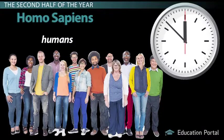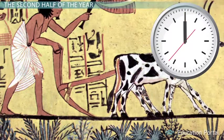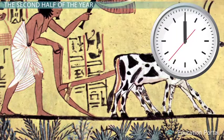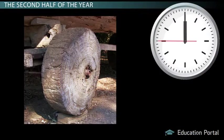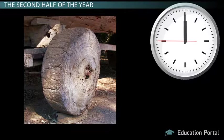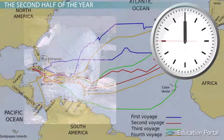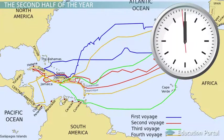Talk about a late arrival to the party. Agriculture is developed only 23 seconds prior to the ball dropping in Times Square. The wheel is invented only 15 seconds before the New Year. And Columbus rediscovers the New World one second before midnight.